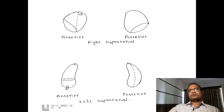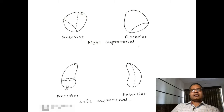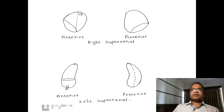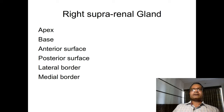The anterior surface of the right suprarenal gland is divided into two parts — medial and lateral — by an anterior ridge. Near the upper part there is the exit of the right suprarenal vein. The medial part comes in relation with the inferior vena cava. The lateral part is further divided into upper and lower parts: the upper part relates to the bare area of the liver, and the lower part relates to the inferior coronary ligament of the liver.